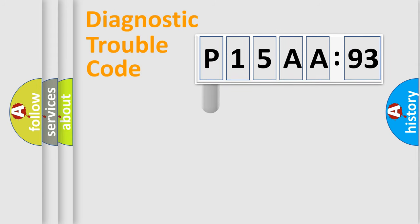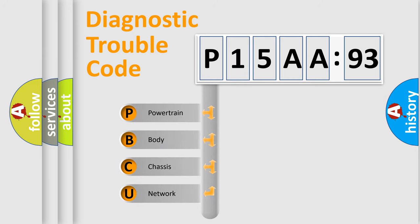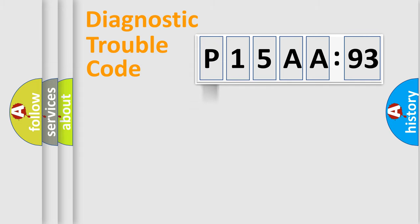First, let's look at the history of diagnostic fault code composition according to the OBD2 protocol, which is unified for all automakers since 2000. We divide the electric system of automobile into four basic units: Powertrain, Body, Chassis, and Network.